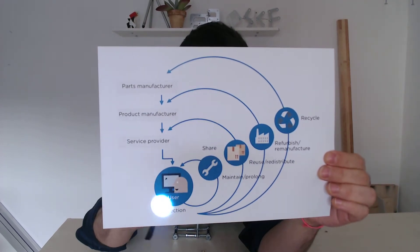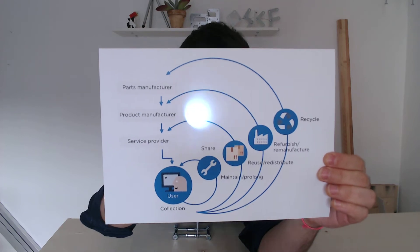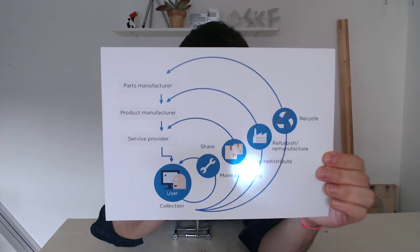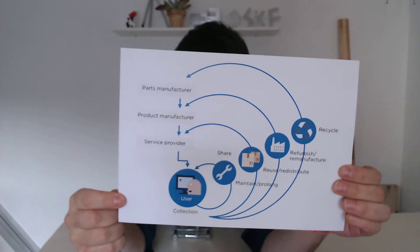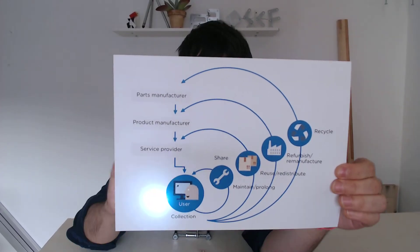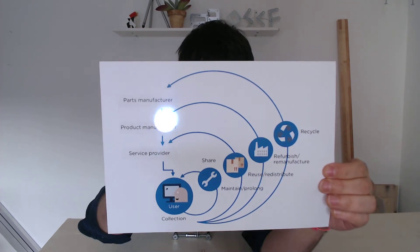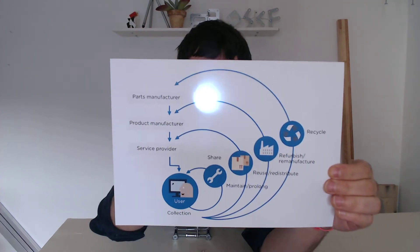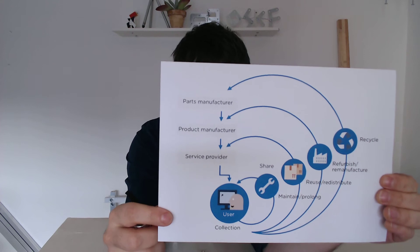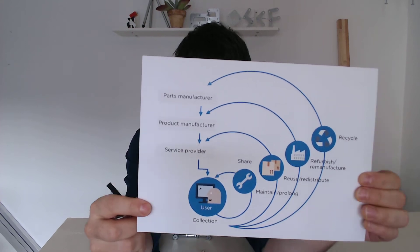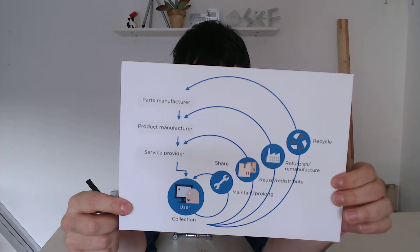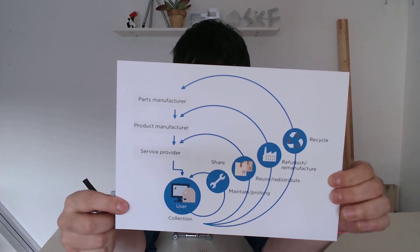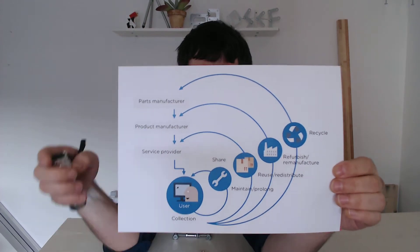The second cycle is also about prolonging the life of your scooter. But in this cycle, a service provider is involved. The service provider offers maintenance or more sophisticated repair work. The third cycle involves a manufacturer. It is for work that requires a factory. You could for example replace large parts of your scooter or take them out and reuse them in another machine. This process is called refurbishing.